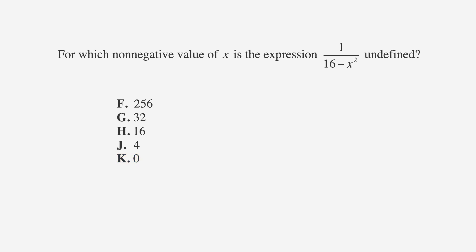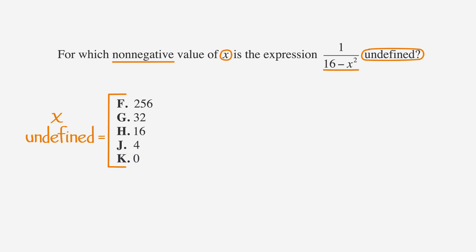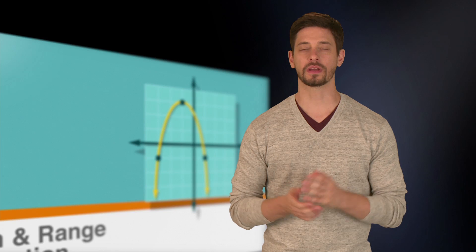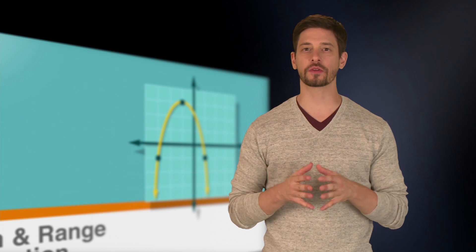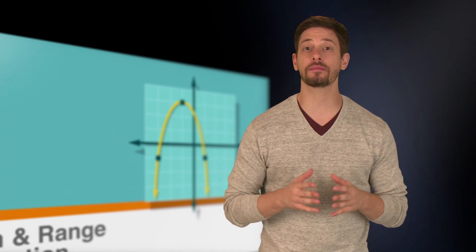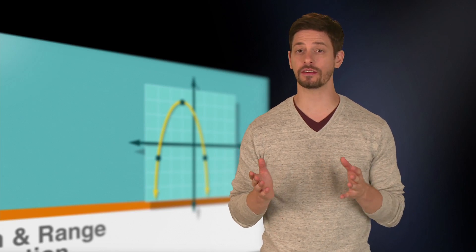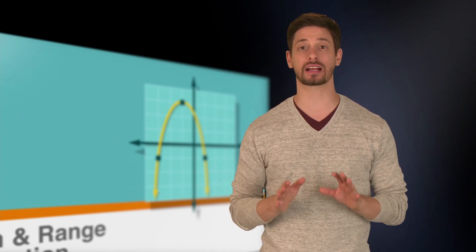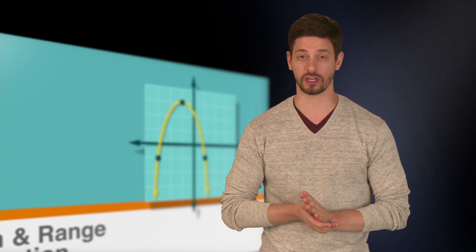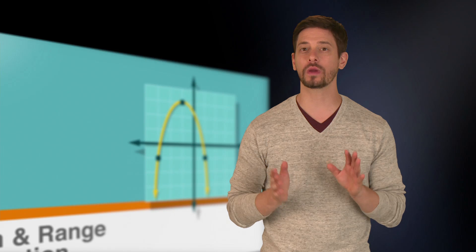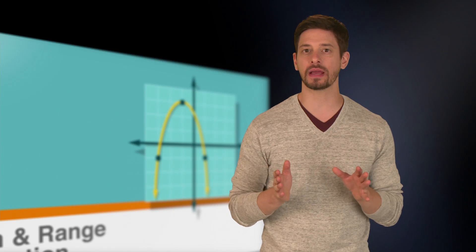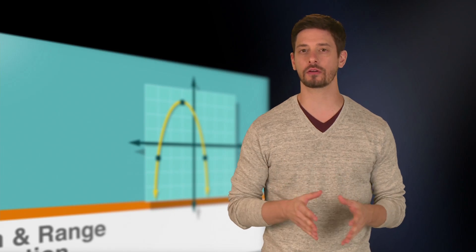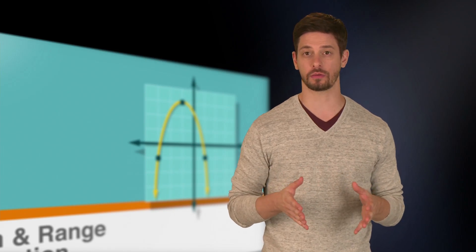We'll start by underlining the facts, circling the keywords, and labeling the answer choices. Because we're looking for the answer choice that makes the function undefined, we can easily back-solve this question. We need an answer that makes the denominator equal to 0.